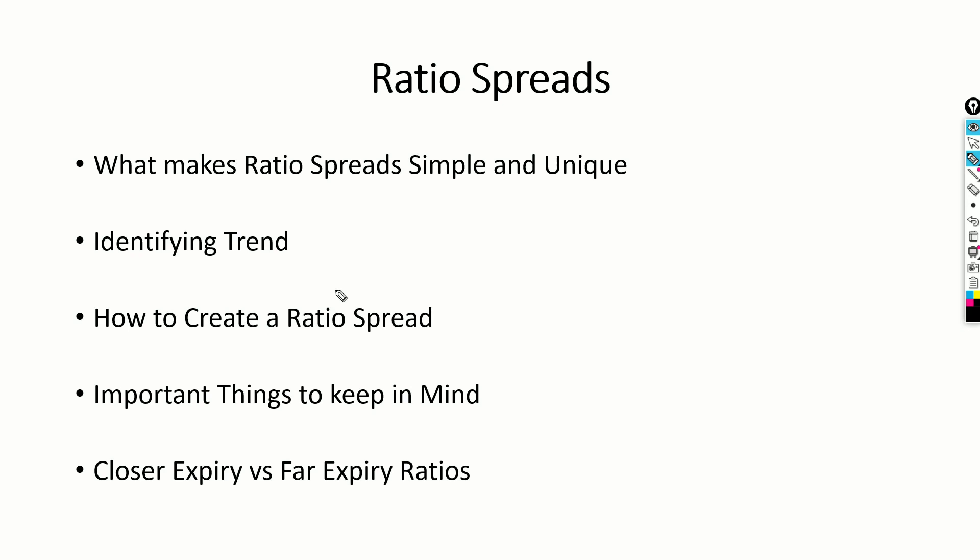If you try to cover all the aspects of ratio spreads including the smallest aspect, it is going to take a lot of time. Hence we are going to split this into multiple videos. This is going to be part one, where we discuss only the basic or fundamental concepts of ratio. As we move towards the second part, since this is a discretionary trade, psychology becomes extremely important — how do you manage the trade when it goes against you, when exactly to adjust and when to exit.